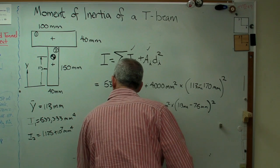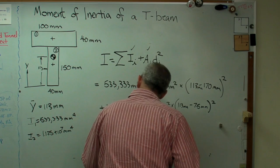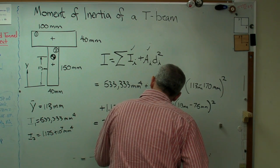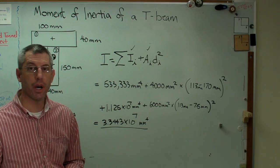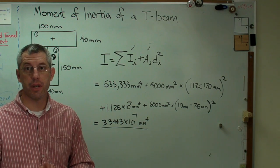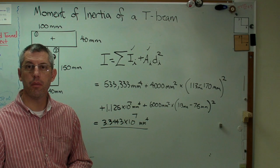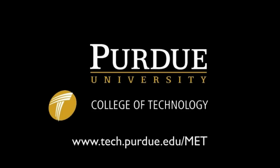And the final answer is a really big number, 3.3 times 10 to the seventh millimeters to the fourth. And if you prefer to convert that to meters to the fourth, the conversion factor is just 10 to the 12th. Divide that by 10 to the 12th, and you're going to get meters to the fourth. So there you go.